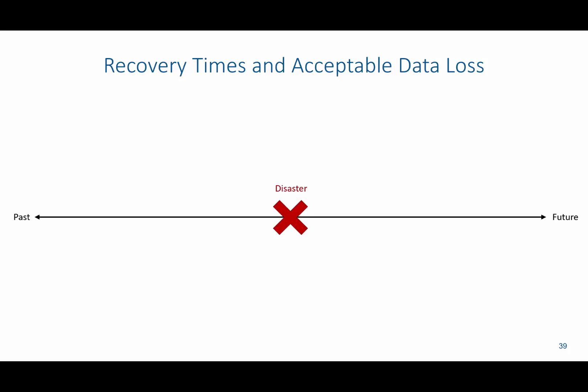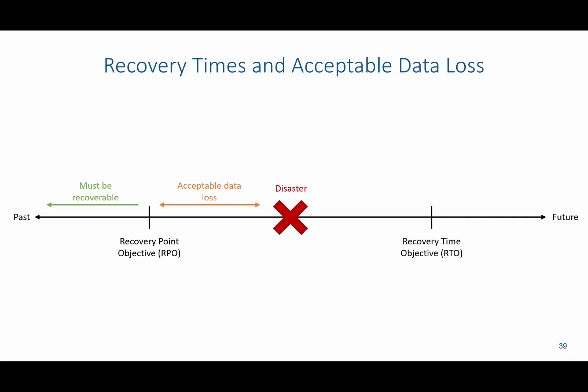An organization needs to determine what is the acceptable data loss versus how fast they want to be able to recover their data. The recovery point objective is the point at which, if a disaster were to occur, we want to ensure that everything up to this point has been backed up — everything must be recoverable before this point, and everything else is acceptable data loss. The recovery time objective is about how fast we must get back to fully functional operations. The time between the disaster and the recovery time objective is the downtime for data recovery, which the organization deems an acceptable amount. From the recovery time objective onward, that's normal operation and everything has been recovered.